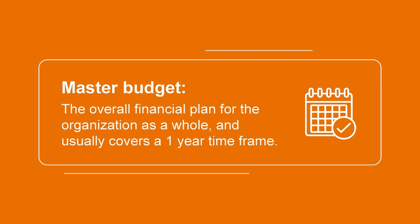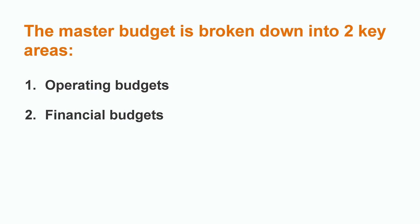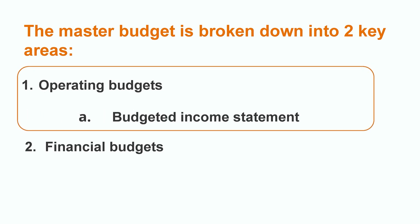Companies typically create what's called a master budget, which is the overall financial plan for the organization and usually covers a one-year time frame. The master budget can be broken down further into two key areas: operating budgets and financial budgets. In this video, we're going to focus on the operating budgets, which result in the creation of a budgeted income statement, broken down into multiple smaller budgets that account for the income-generating activities of the business.